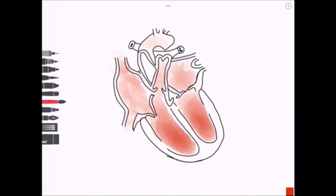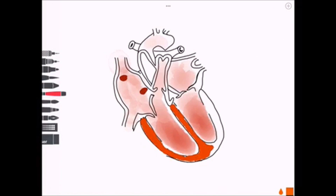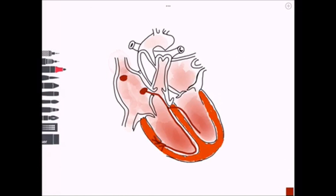We're going to focus on the right atrium, where we can first see the SA node — the sinoatrial node — the pacemaker of the heart. This is located just where the superior vena cava enters the right atrium.